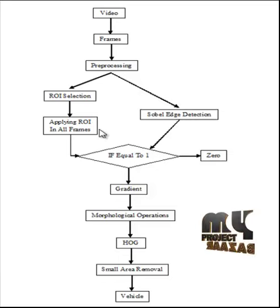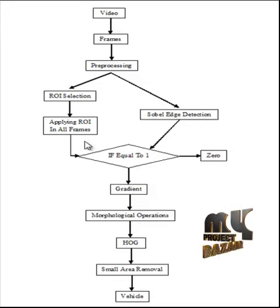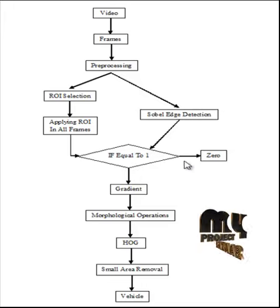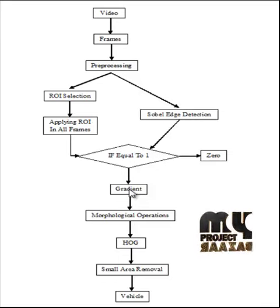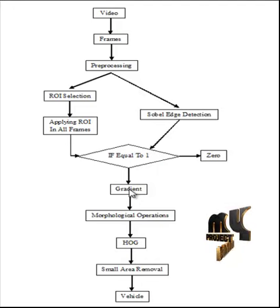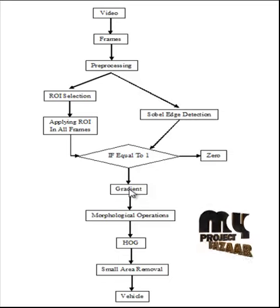The video frames are then extracted. After that, the edge detection methodology is applied to the original video frames. The detected edge regions and the extracted region of interest regions are compared. Based on that, if they are matched, the regions are selected; otherwise, the regions are passed to the next process, which is the calculation of gradient information from the images. The calculation of gradient information normalizes the overall intensities of the images and produces the object locations accurately.